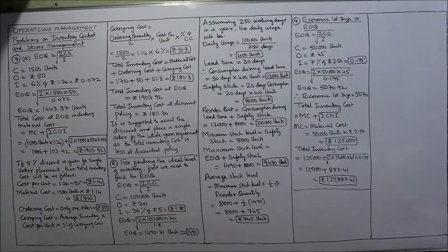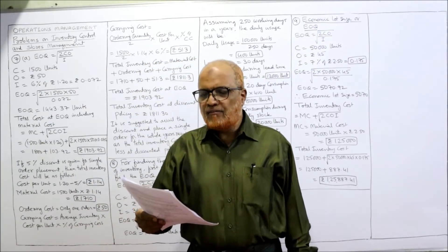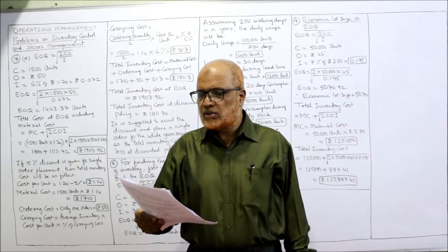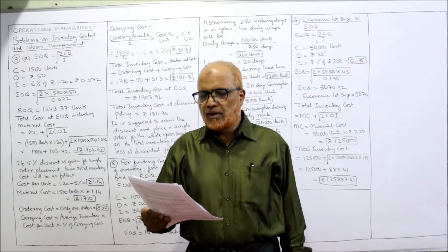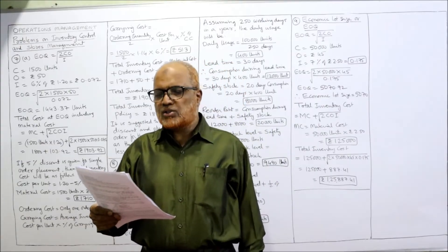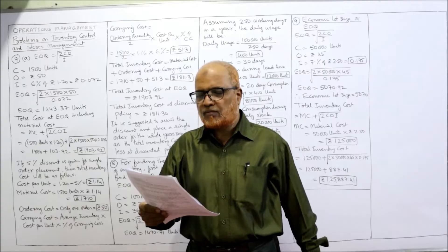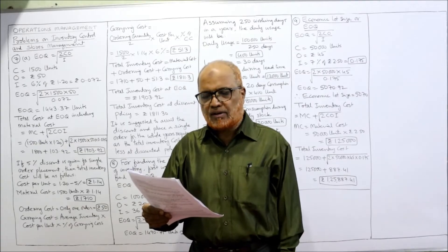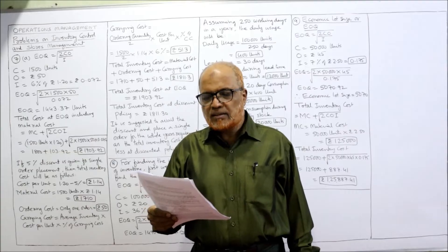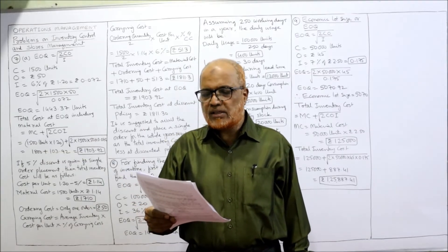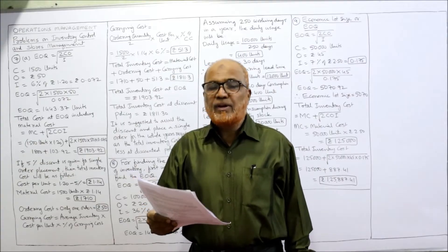See the seventh problem: a company uses every month 1500 units of a component costing 1.20 each. Each purchase order costs 15 rupees and the inventory carrying cost is 6% per year of the average inventory. Find the EOQ and is it worth it if a 5% discount is given for a single order placement.